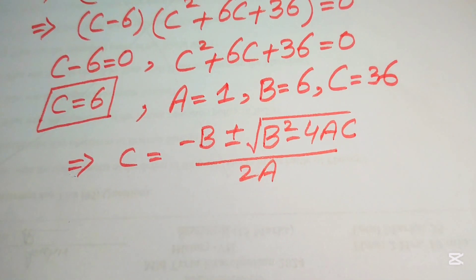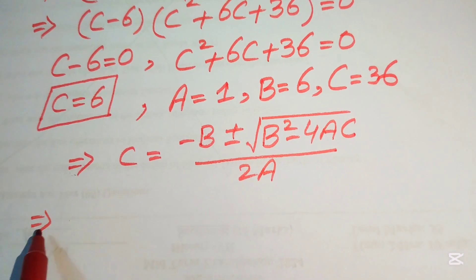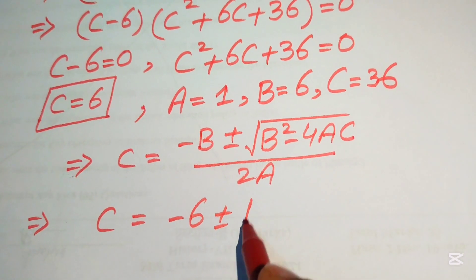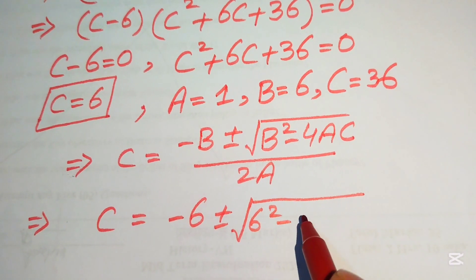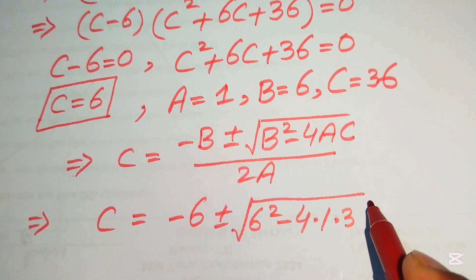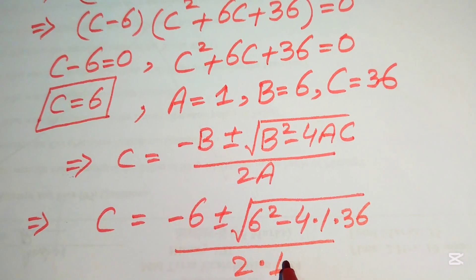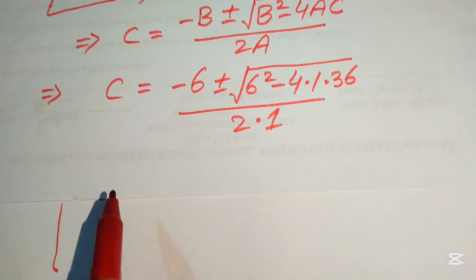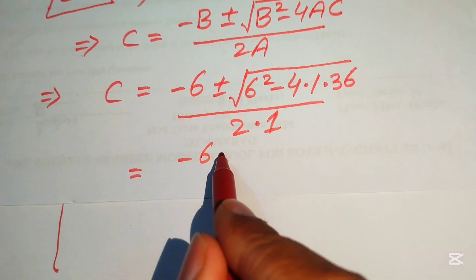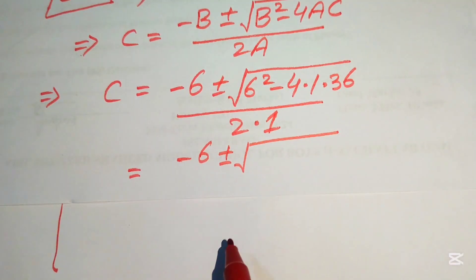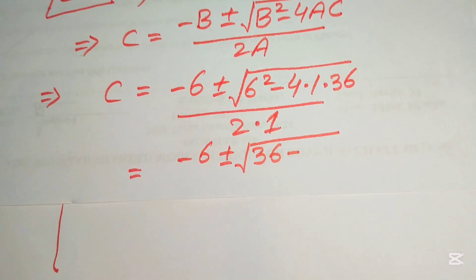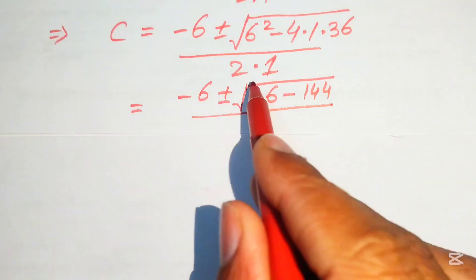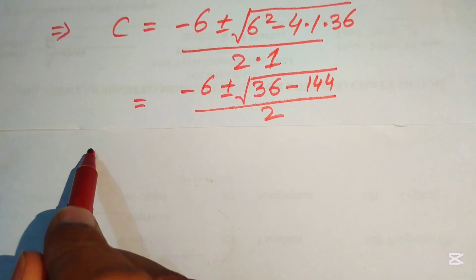Substituting the values: c equals negative 6 plus or minus the square root of (6 squared minus 4 times 1 times 36), divided by 2 times 1. Simplifying: 6 squared is 36, and 4 times 36 is 144, so we have the square root of (36 minus 144) divided by 2.